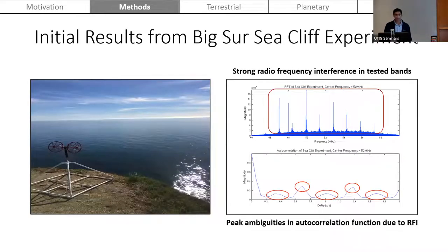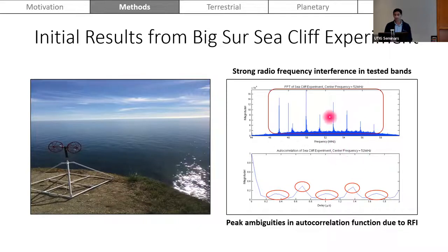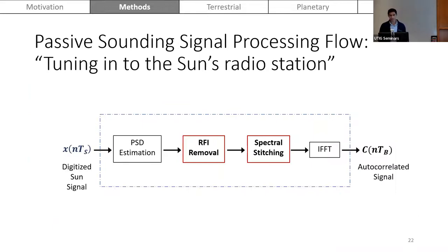If you naively go out to Big Sur and look at what the autocorrelation might look like, you would see multiple echo peaks resulting from radio frequency interference. Looking at the spectrogram of the received measurement, you see powerful radio sources from FM radio stations and TV stations that are much greater than the background power of the sun. So there are additional processing steps beyond just going from the digitized sun signal to the autocorrelation signal.